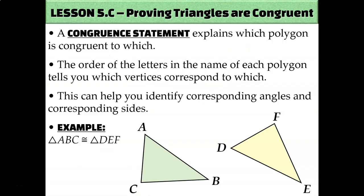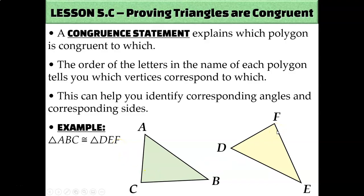When you have congruent shapes, you can write a congruence statement to explain which parts are congruent to which. The order of the letters in your congruence statement tells you which vertices correspond to which. For example, if I'm looking at these two triangles and I have this congruence statement, that tells me that A and D are corresponding, so angle A and angle D would be congruent to each other. B and E are both in the middle, so angle B and angle E are congruent to each other. And C and F are both the last letters, so angle C and angle F would be congruent to each other.